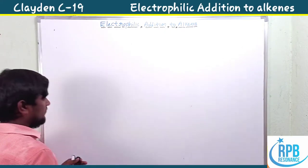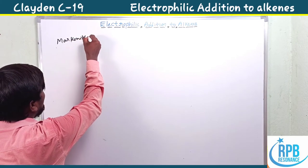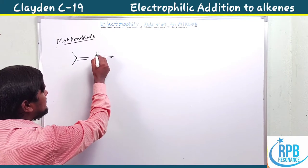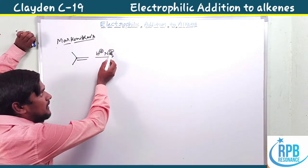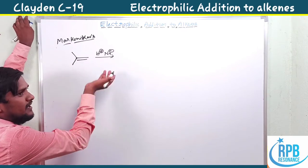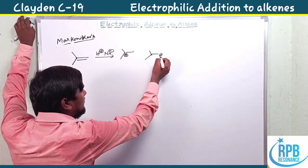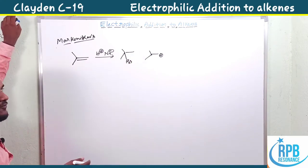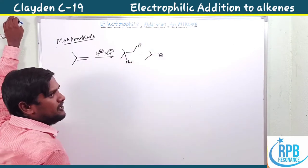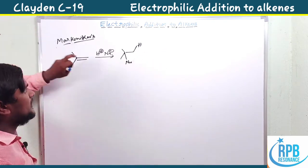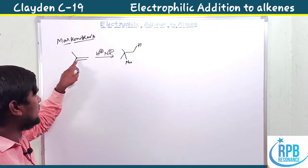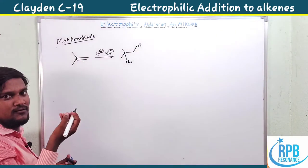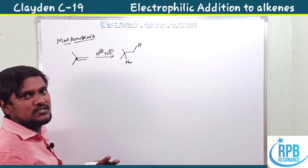Markovnikov's rule is the electrophilic addition guideline. For an unsymmetrical alkene with H⁺ and a nucleophile, two types of carbocation orientations are possible. The more stable tertiary carbocation gets attacked by the negative charge — the nucleophile. The definition of Markovnikov's rule: the negative part of the reagent attacks the alkenic carbon bearing fewer hydrogen atoms.